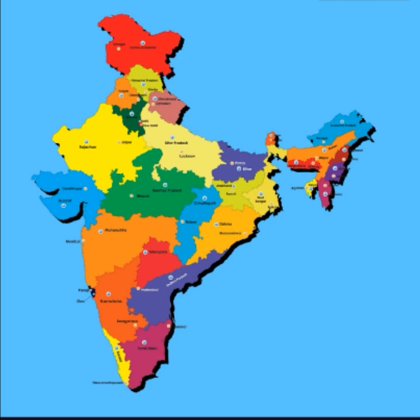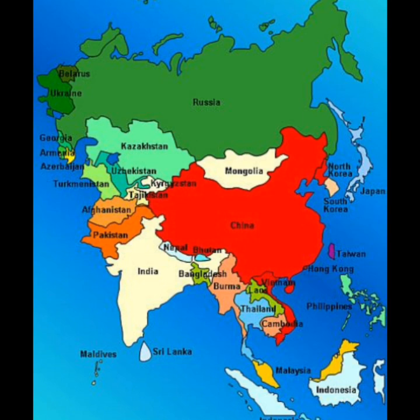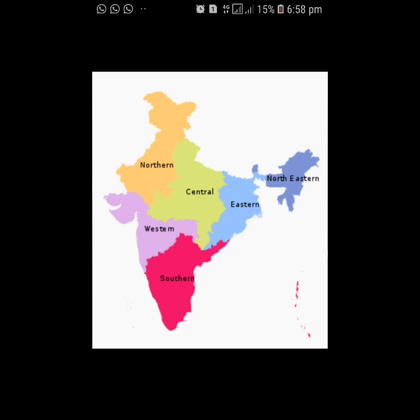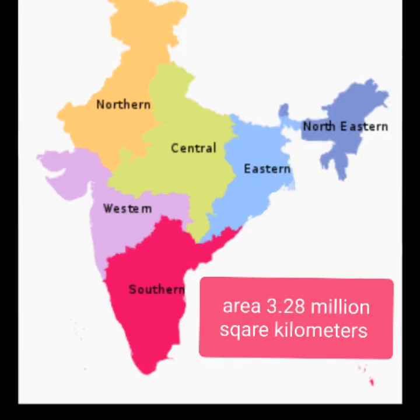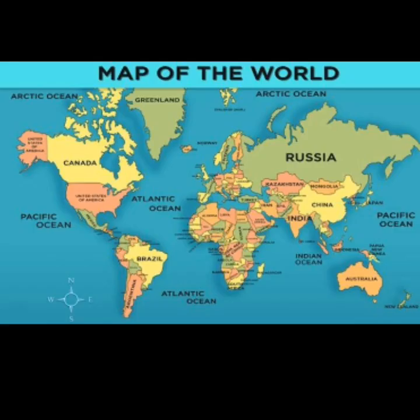Now we should know about the size of India. India is a large country — it is the seventh largest country in the world. In Asia, India is the third largest country. The land mass of India has an area of 3.28 million square kilometers. India's total area accounts for about 2.4% of the total geographical area of the world.